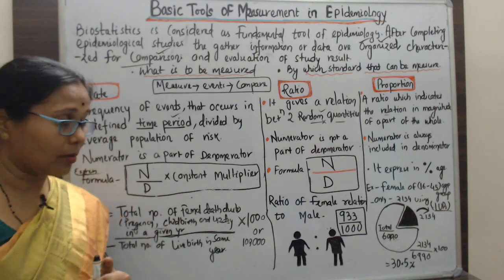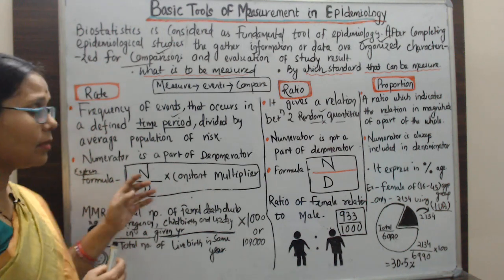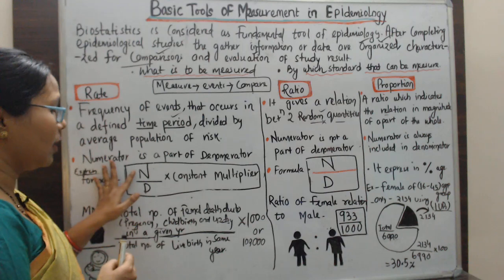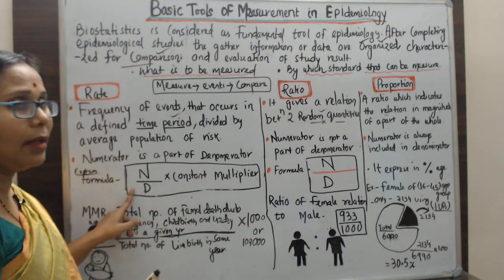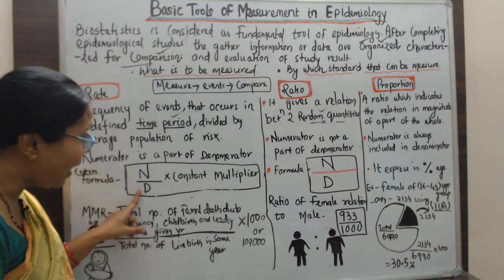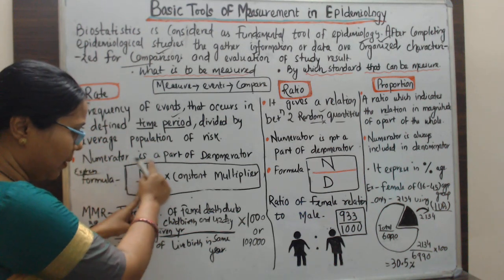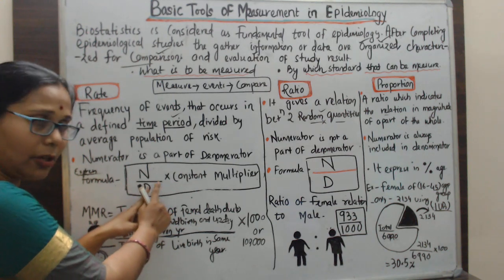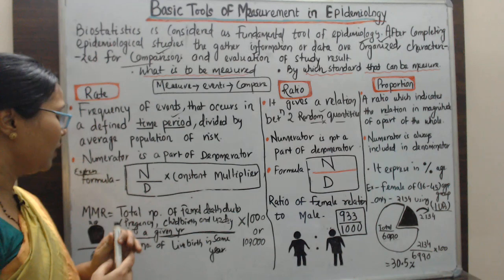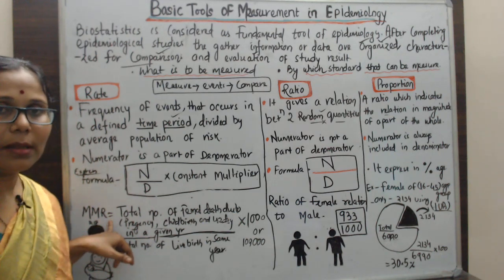We express the rate using the formula: N divided by D, multiplied by a constant, where N is the numerator and D is the denominator. Here the numerator is a part of the denominator. For example, the MMR — the maternal mortality rate — illustrates this well.